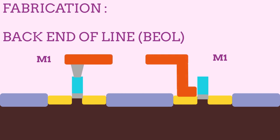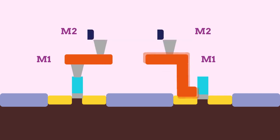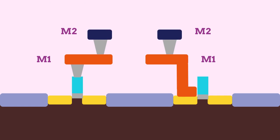After FEOL fabrication is completed, connections must be made to link the circuits together, which happens during back end of line. BEOL is the manufacture of metal interconnects. This process is called metallization, where metal layers are deposited on the wafer to form conductive pathways.